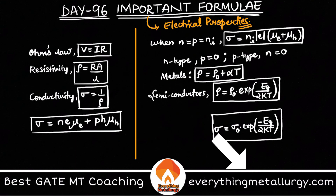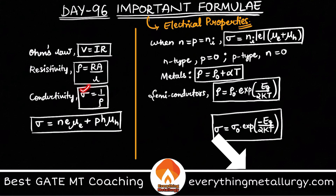Similarly, we have something called conductivity. Conductivity is simply the reciprocal of resistivity. If resistivity is less, conductivity is very good — meaning the opposing force to electricity flow is less. That is why we have conductivity sigma σ = 1/ρ.